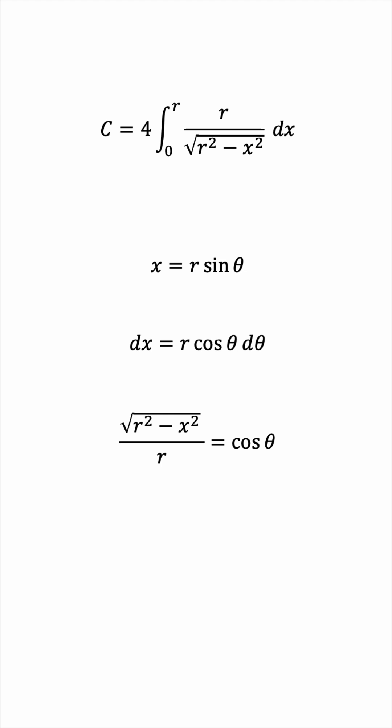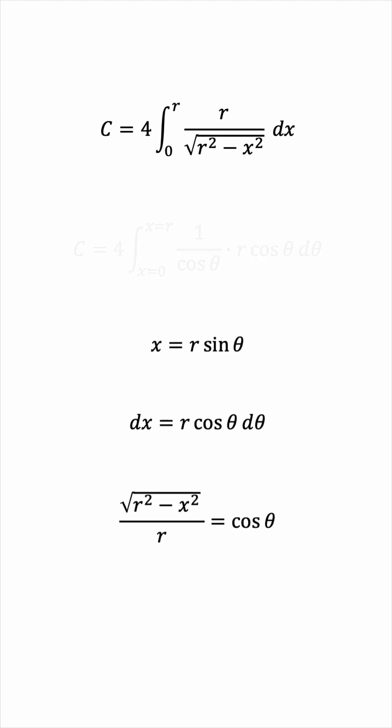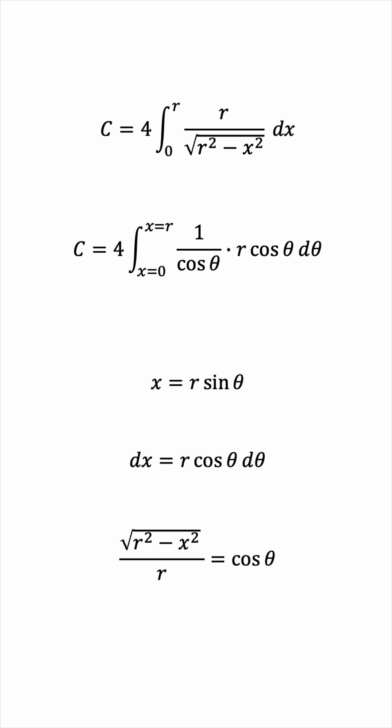So we can now transform the integral from the x world to the theta world. We'll have 1 over cosine theta times r cosine theta d theta. The cosines cancel out. r is just a constant in the eyes of theta, so we can take it outside the integral.